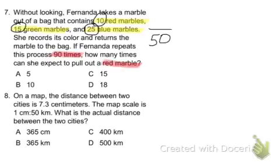So if there's 50 total, 10 of them are red. We can simplify that to 1 fifth. So 1 out of every 5 times, we're going to get a red marble.